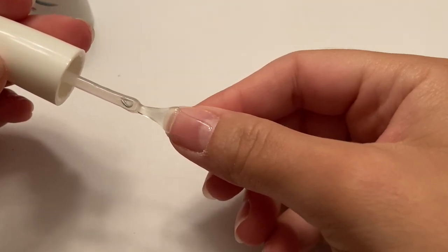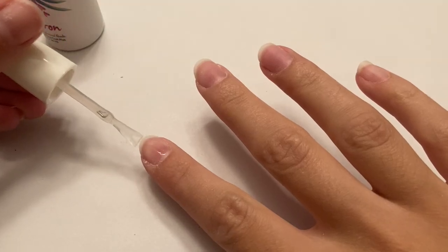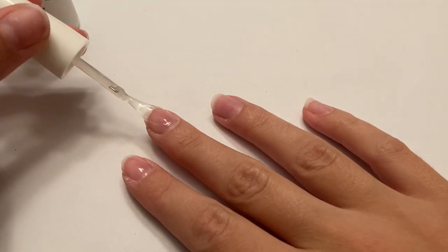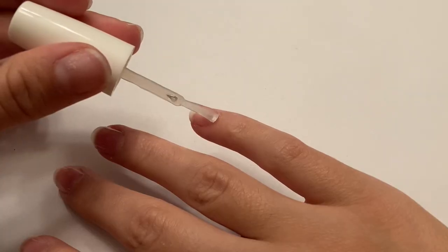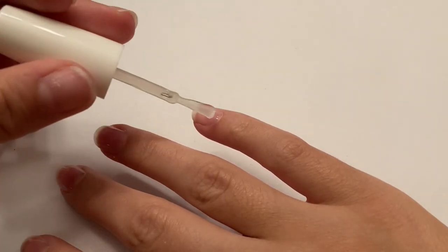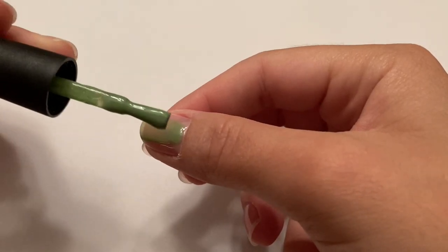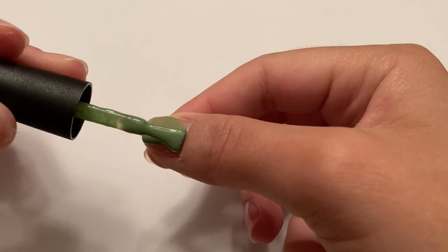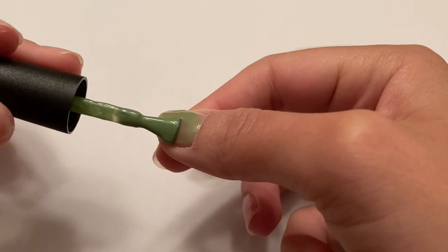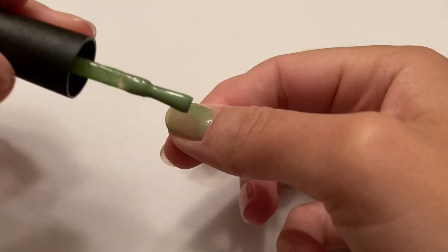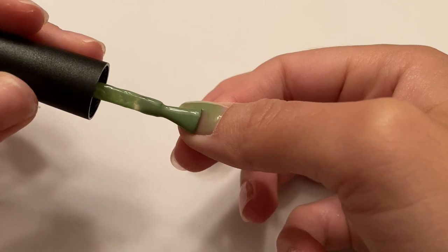So now I'm just applying the Murron peel off base coat to all of my nails. And now I am applying my gel polish color. I decided to do something pretty simple for this video, so I chose this nice light green color.